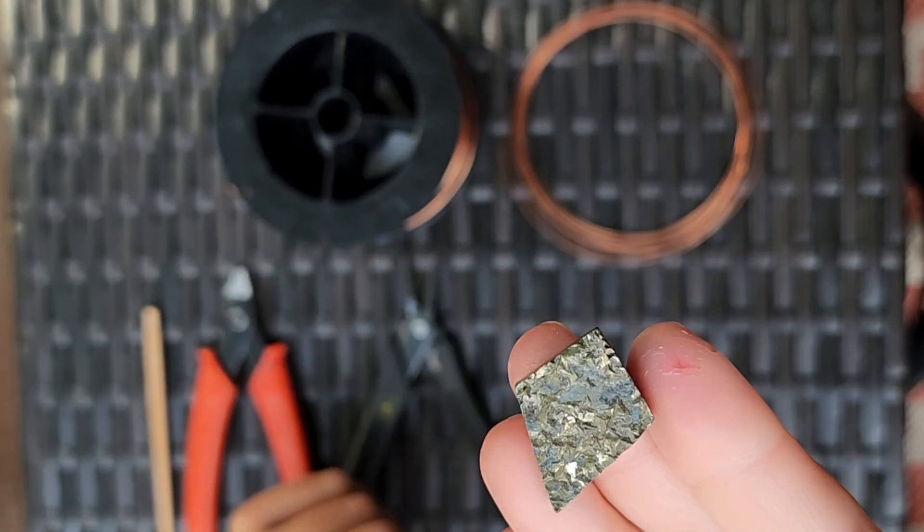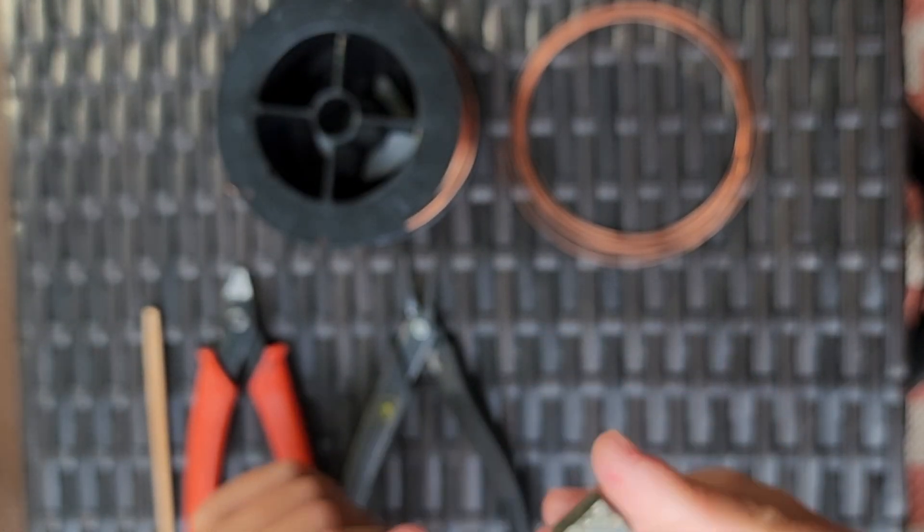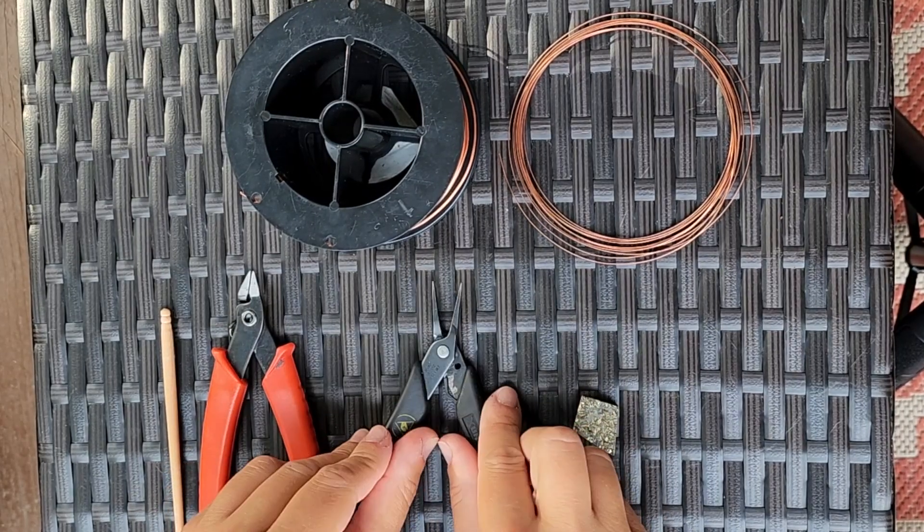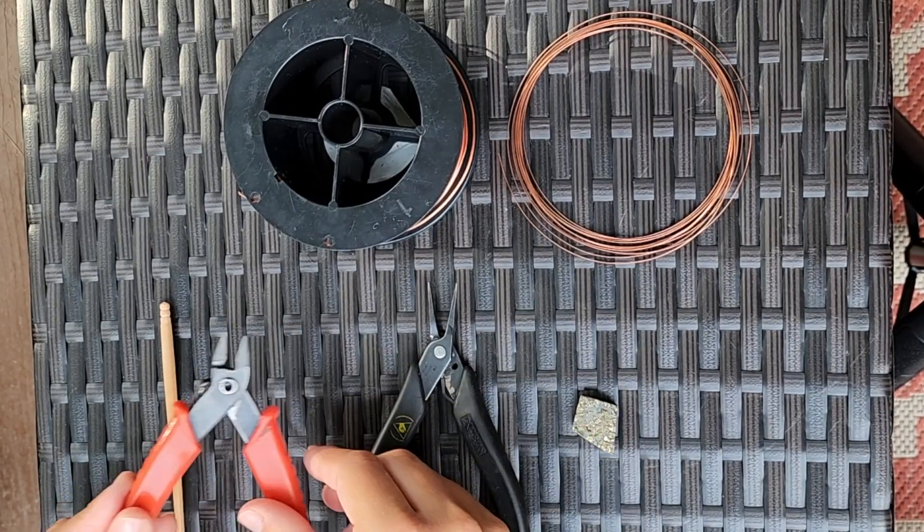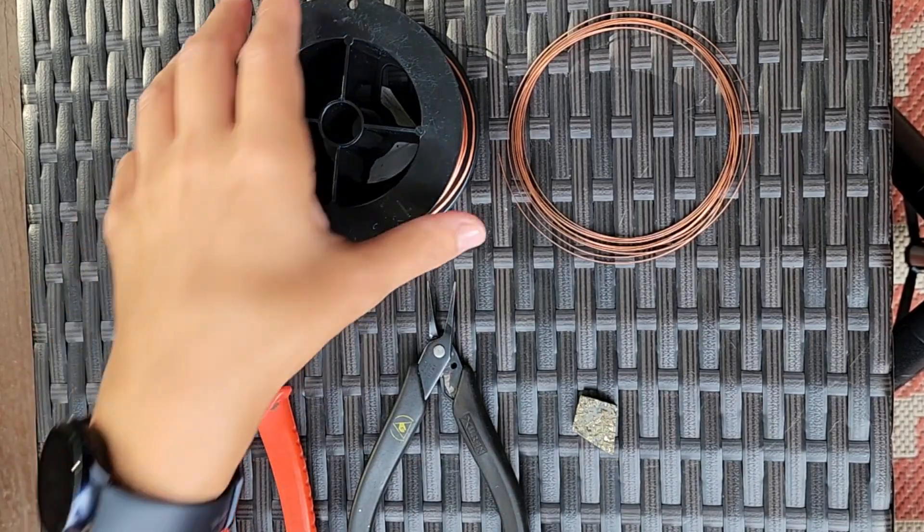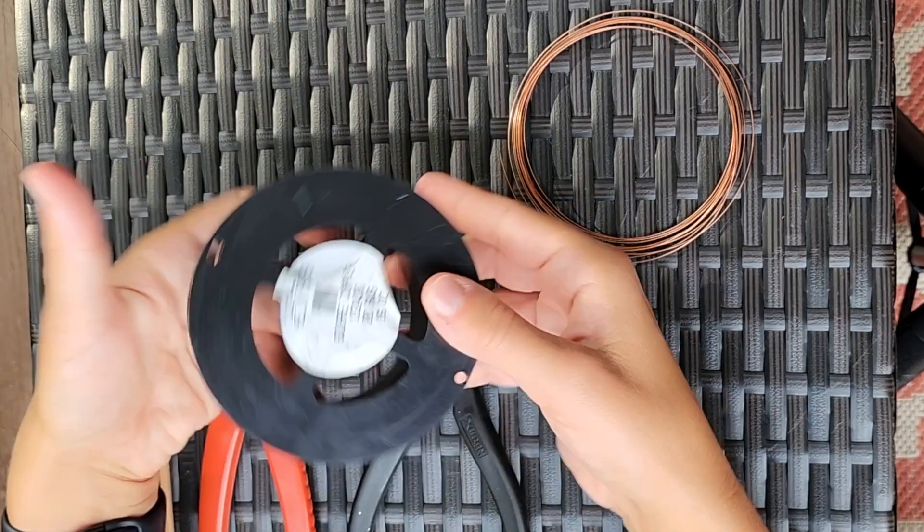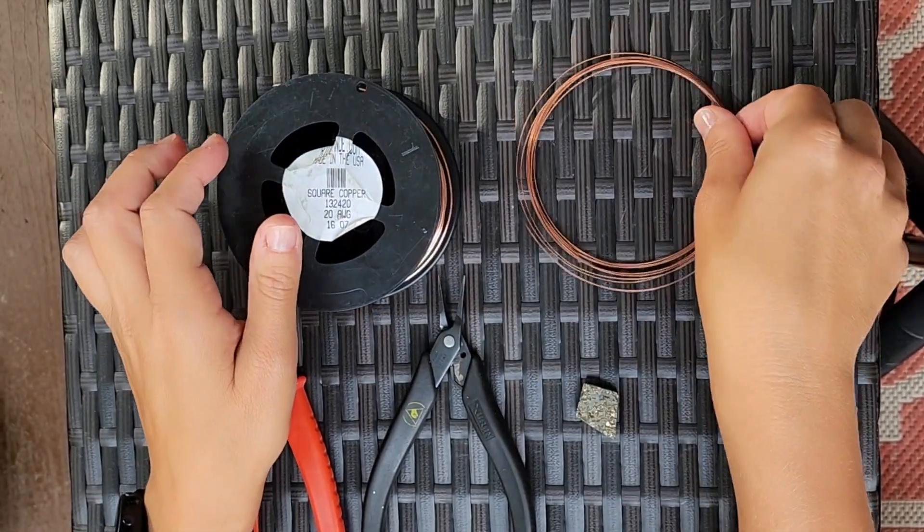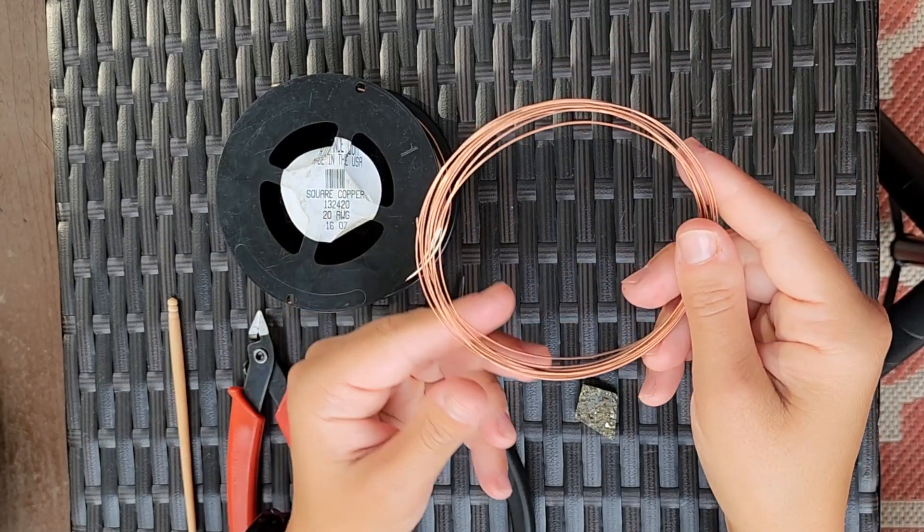We're going to need our stone, pliers, flush cutters, a paintbrush or something similar, 20 gauge square copper wire, and 21 gauge half round copper wire.